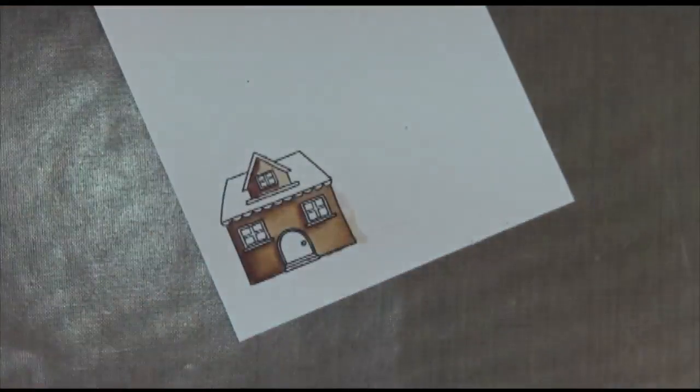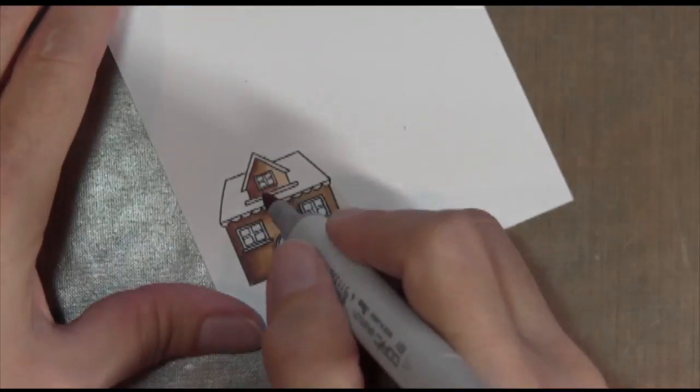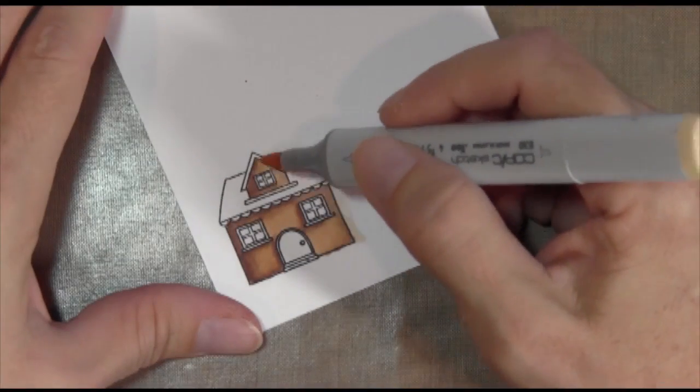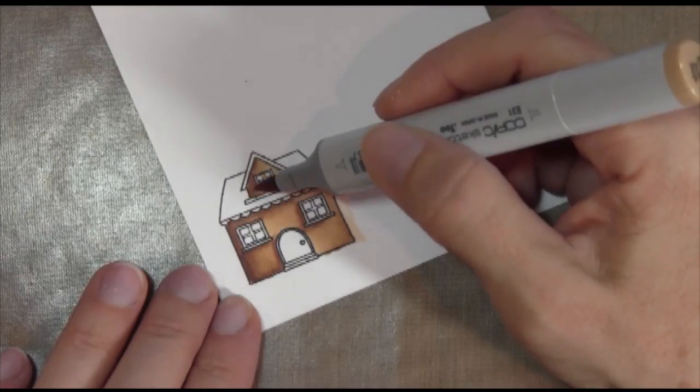It's hard when you're doing these really tiny areas, but the Copic markers have a very fine tip. So you can barely touch the paper and you get just a very small dot of color.